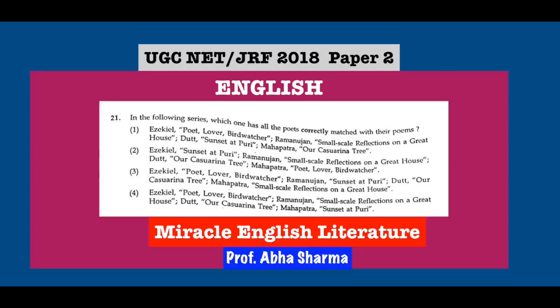Question number 21: In the following series, which one has all the poets correctly matched with their poems? The correct answer is the fourth option: Ramanujan with Small-Scale Reflections on a Great House, Daruwalla with Kanya Sririna Tree, and Mahapatra with Sunset at Puri.